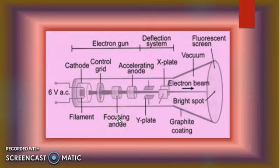The anode will attract the electrons and speed them up — we use it as an electron accelerator. As the electrons move in the same direction, they form an electron beam. Now here we have plates: X plates and Y plates.